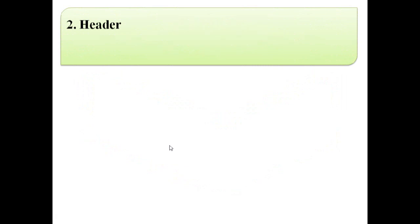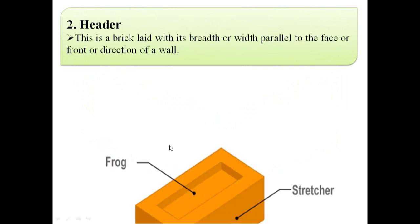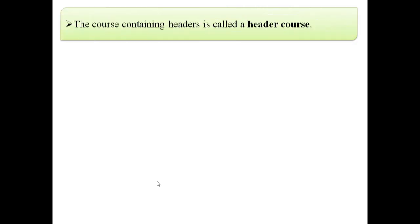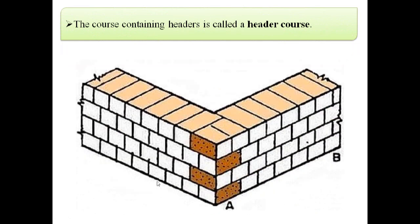The second term is header. As shown in this image, a header is a brick laid with its breadth or width parallel to the face or front or direction of a wall. The course containing headers is called a header course. In this image we can see these courses contain headers, so it is known as a header course.